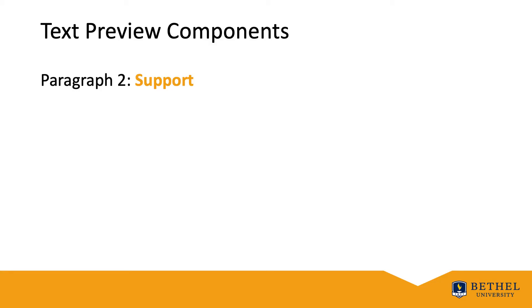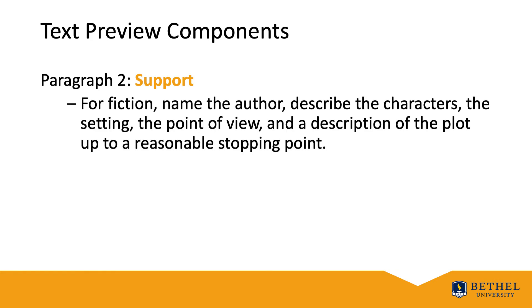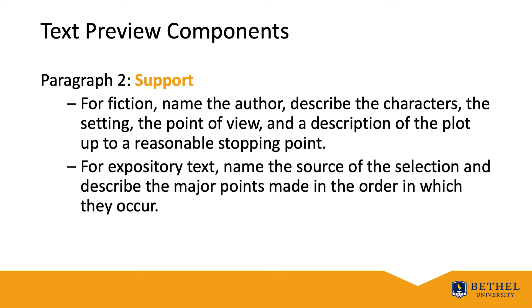Paragraph two of the text preview is the support — the meat and potatoes. For fiction, name the author, provide a description of the characters, setting, and perhaps the point of view. Describe the plot up to a reasonable stopping point — provide a substantial scaffold that does not reveal the outcome. For expository texts, name the source and selection, its location, and describe the major points and where they occur.